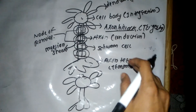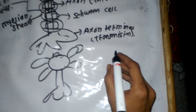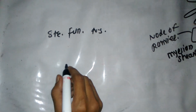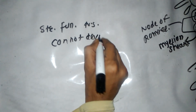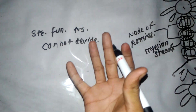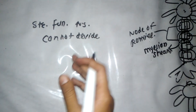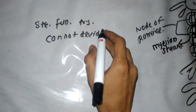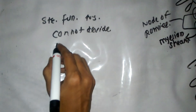Now some important points about the neuron. First, the neuron is called the structural and functional unit of the nervous system. Another important point is that neurons cannot divide because they do not contain a centriole. The centriole is very important for spindle formation, which is a very important step in cell division. Since the centriole is absent in neurons, neurons cannot undergo spindle formation and therefore cannot divide.